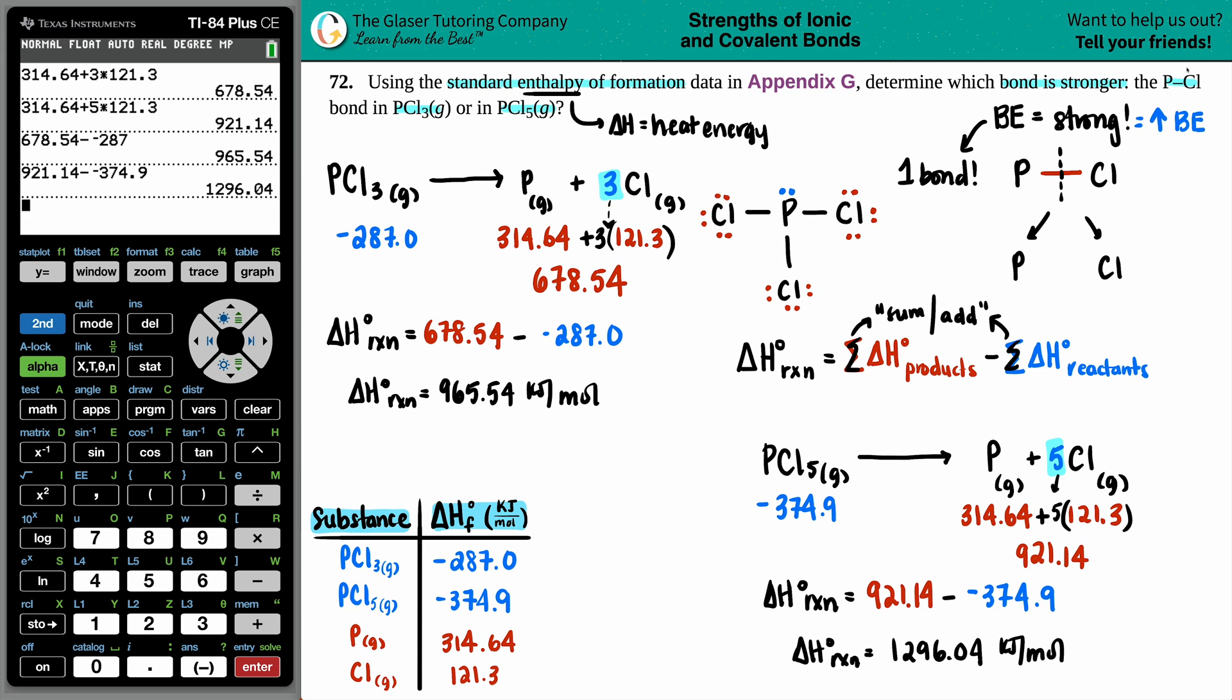So in a PCl3 molecule, how many P-Cl bonds are there? There's one P-Cl bond, two P-Cl bonds, and three. In order to find out the bond energies for just a single one, we have to take our number and divide it by the total number of P-Cl bonds, which is three.